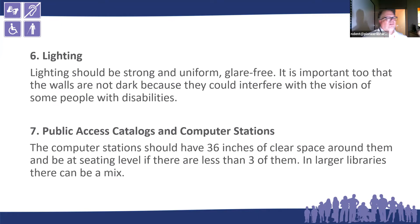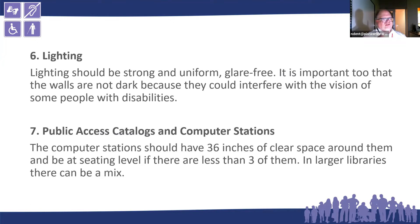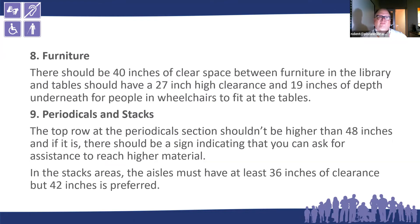Number six is lighting — it should be strong, uniform, and glare-free. Consider the vision impaired: 90% of people with vision issues are vision impaired, not totally blind, so lighting matters greatly. Number seven: your public access catalog and computer stations should have at least 36 inches of clear space surrounding them. For three or fewer stations, provide a seated-level option. Number eight: furniture should have 40 inches of clear space, be 27 inches high with 19 inches of depth underneath so people in wheelchairs can fit at the tables.